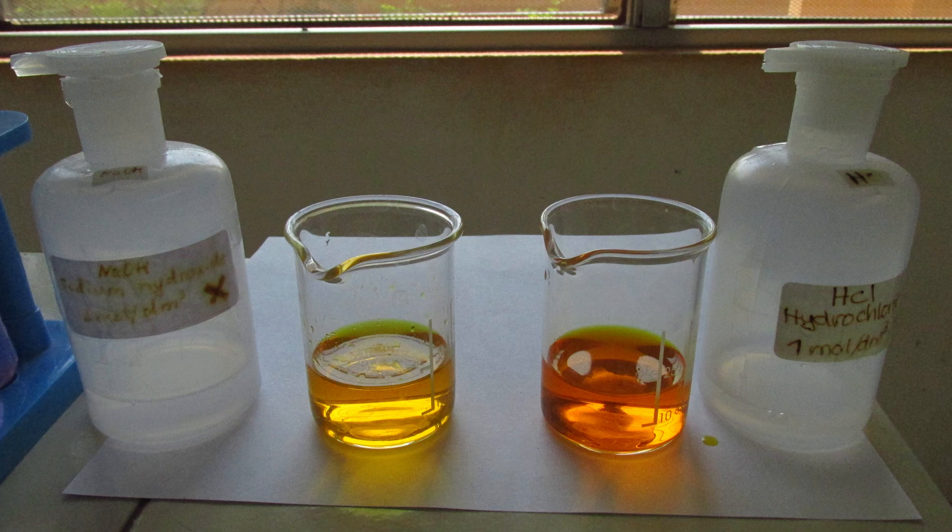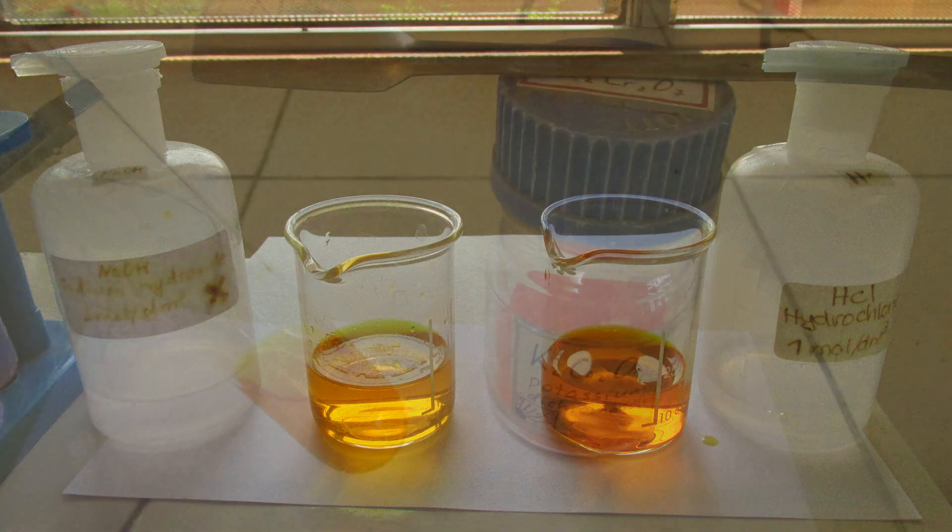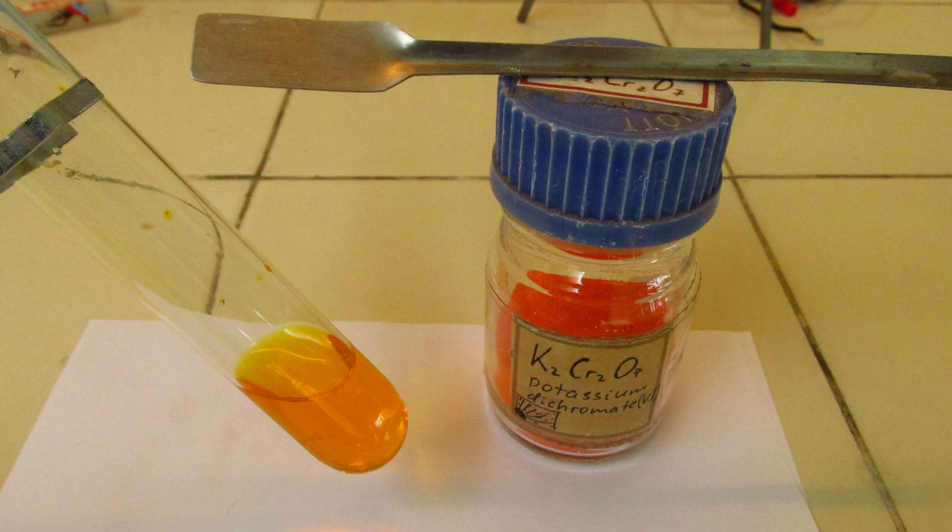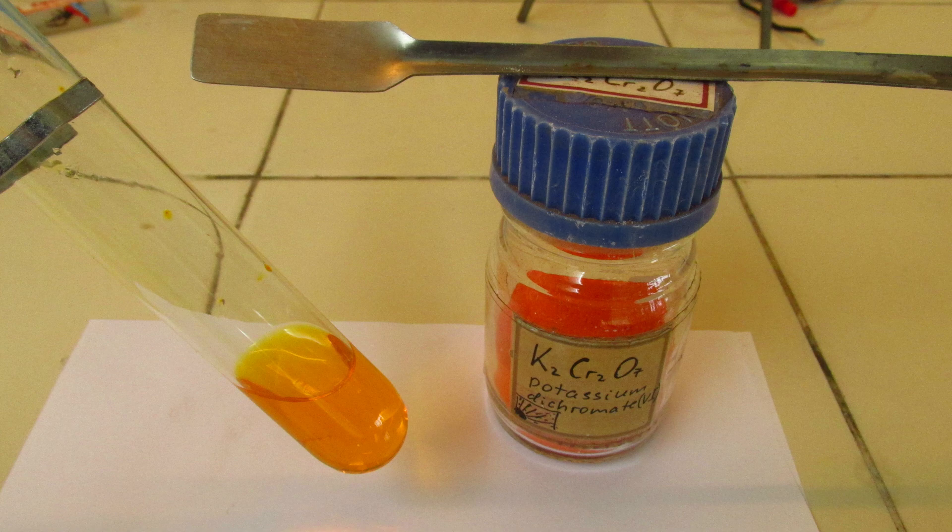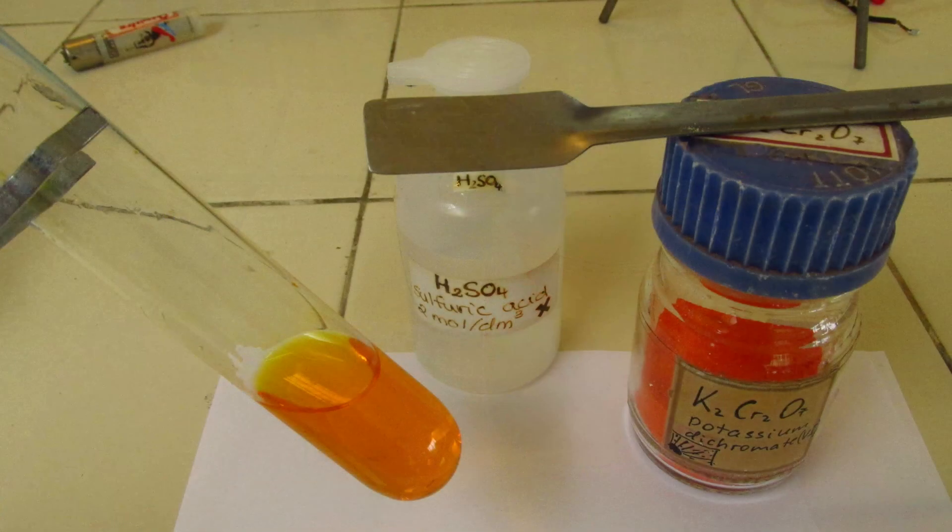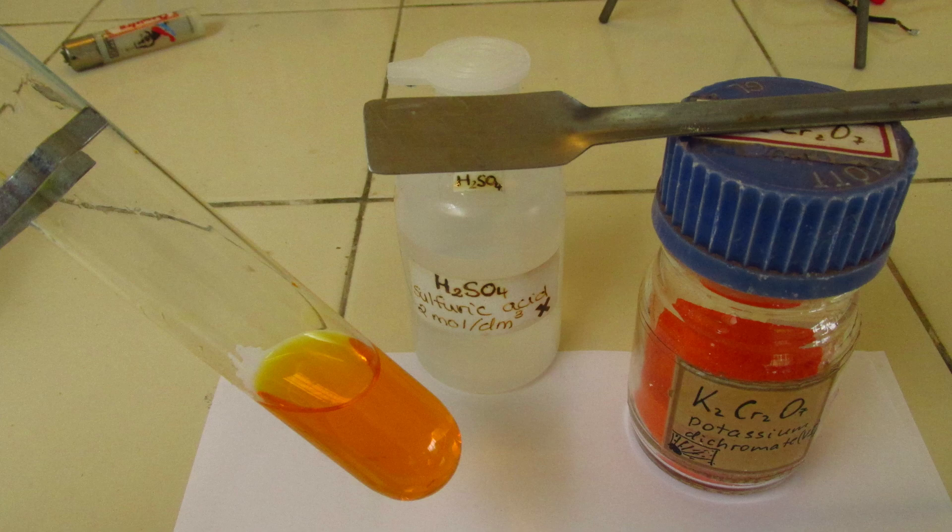But essentially we need acidified solution of potassium dichromate, because that's a pretty famous oxidizing agent, and we use it in many tests. So here I prepared it, acidified it with sulfuric acid, and now I'm trying to add some reducing agent to it and see what happens.